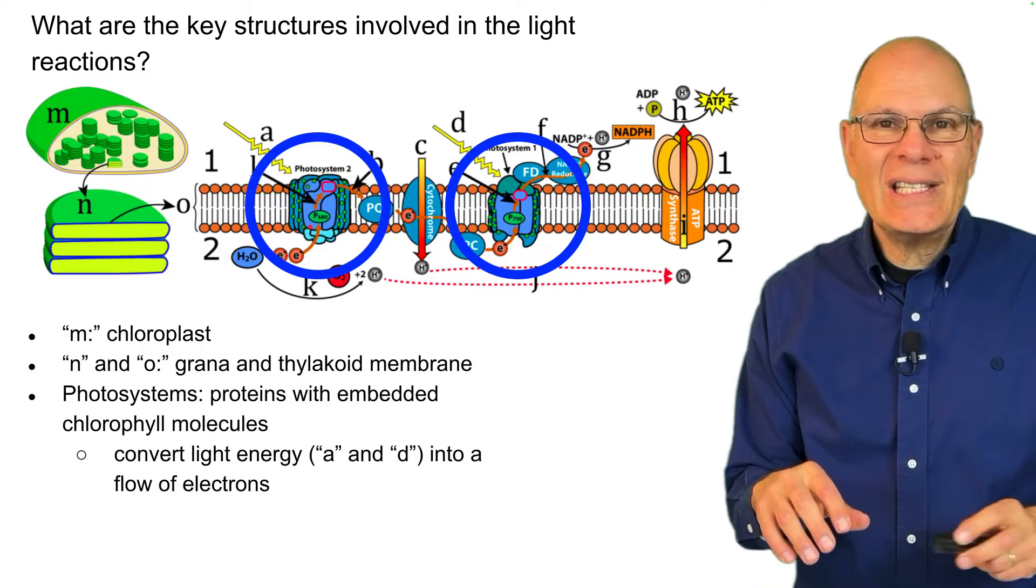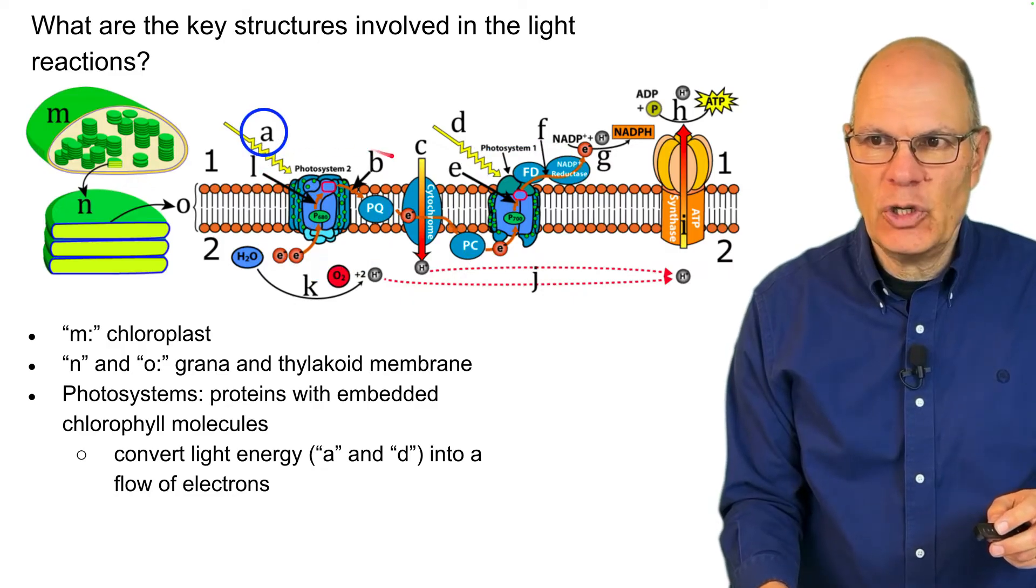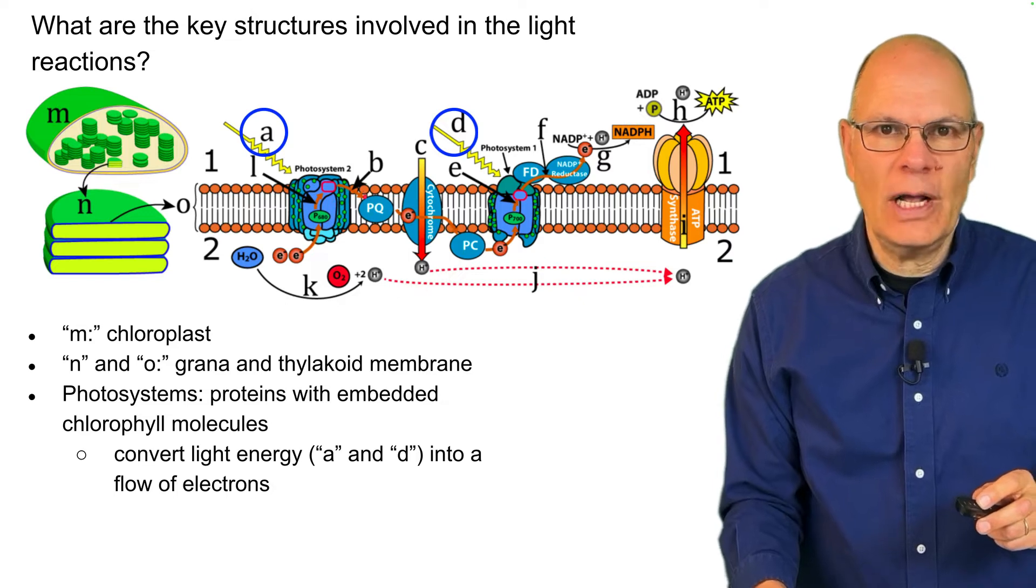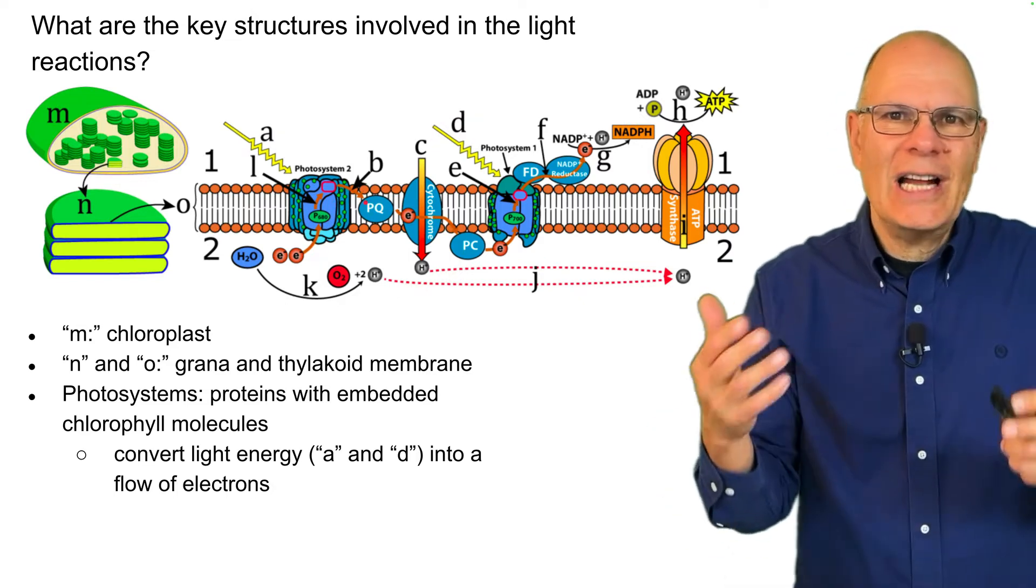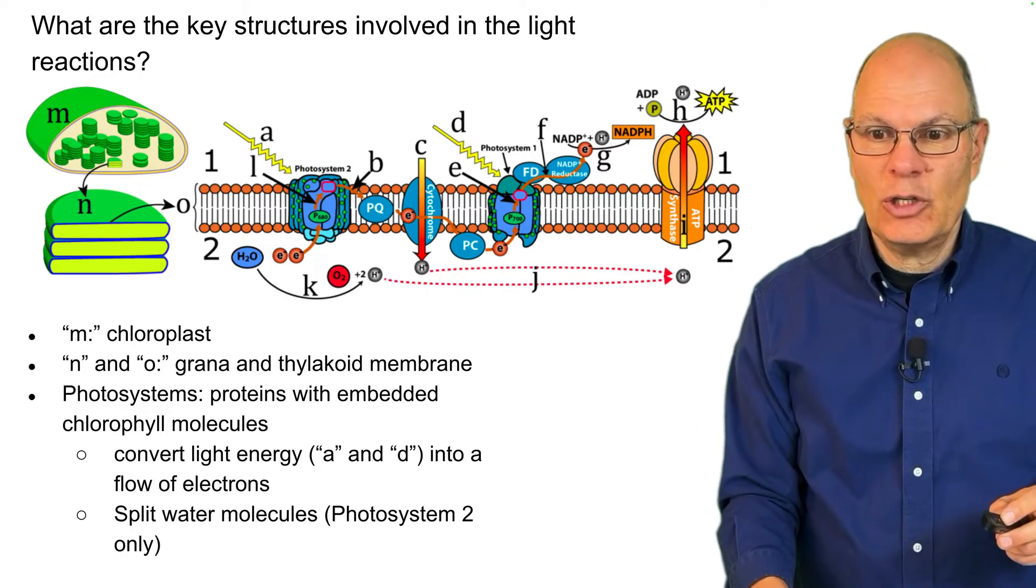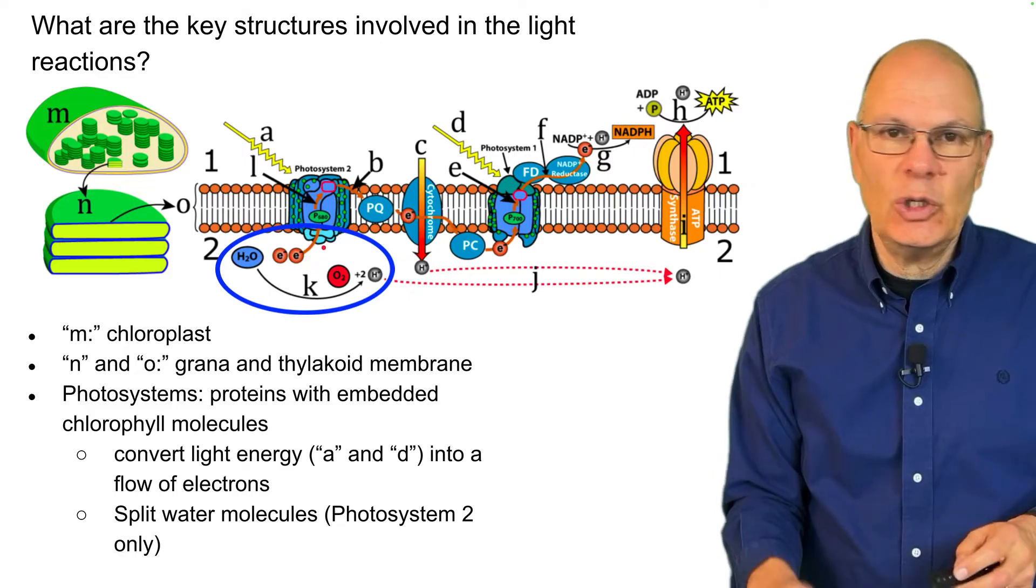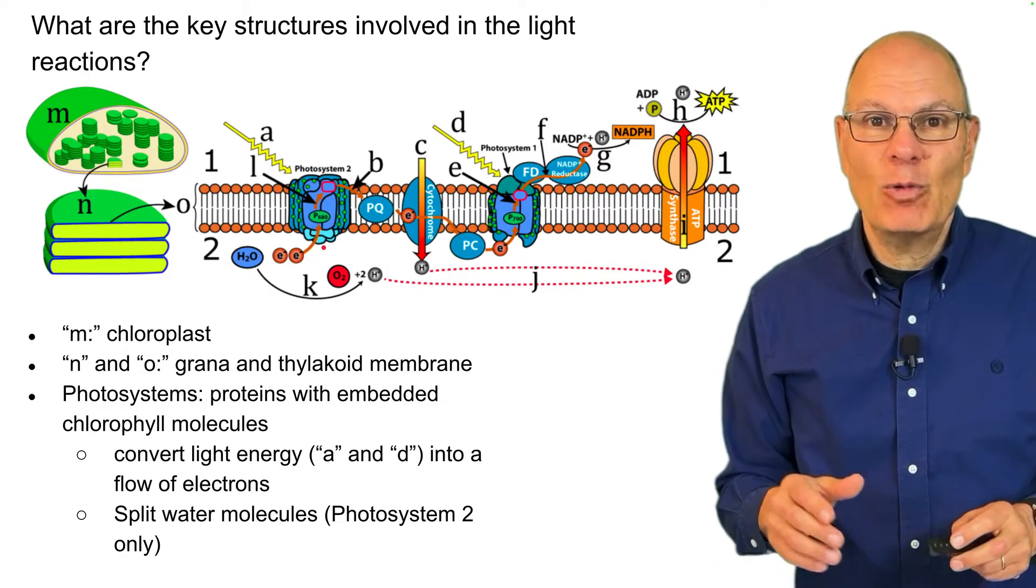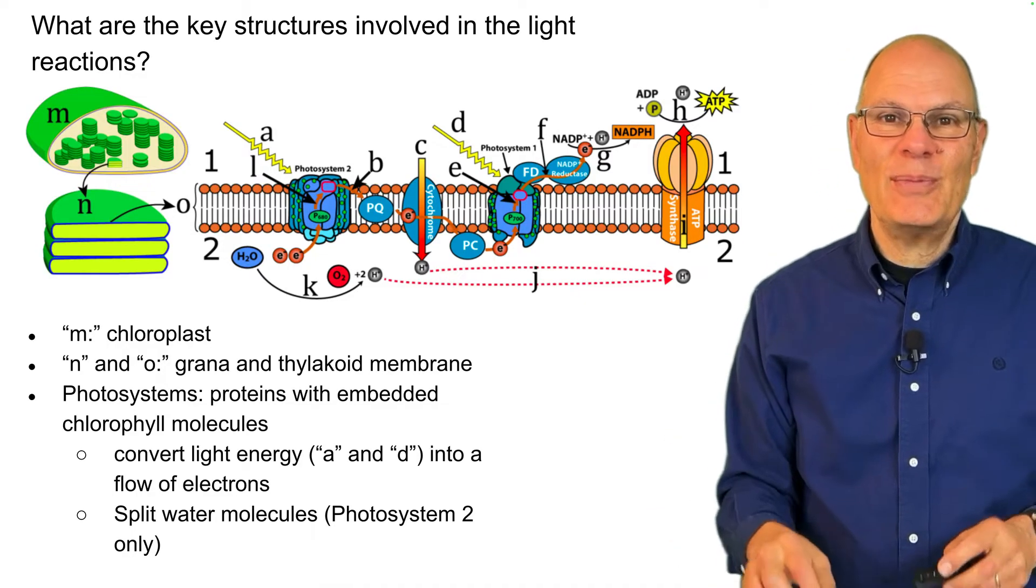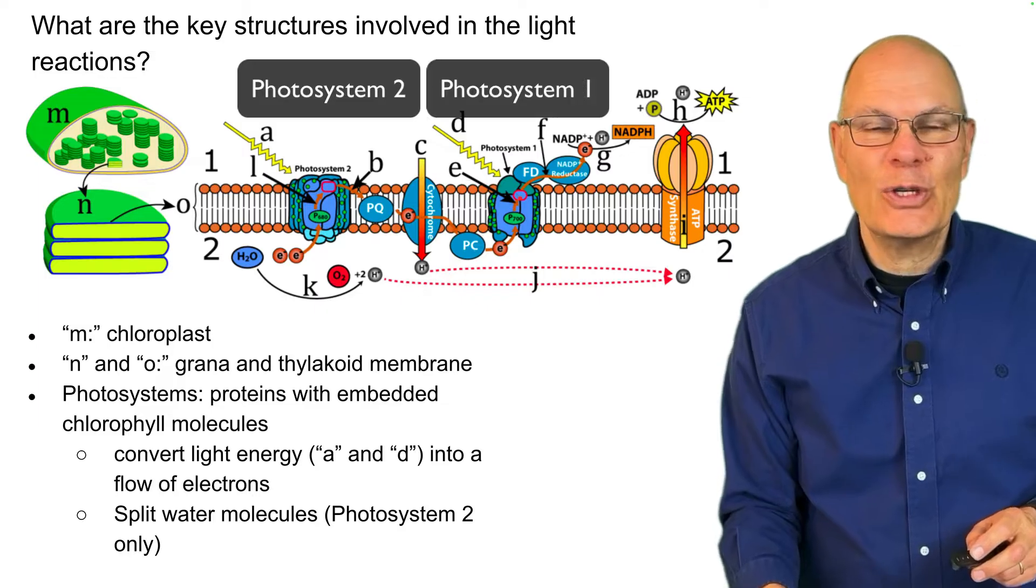Those photosystems are the things that actually convert light energy, shown here at A and shown here at D, into a flow of electrons. This whole array is kind of like a solar panel that's converting light energy into electricity. They're also splitting water molecules, and that happens in photosystem two. In the organization of the photosystems in the thylakoid membrane, photosystem two comes before photosystem one.